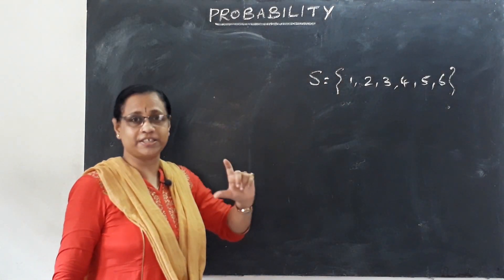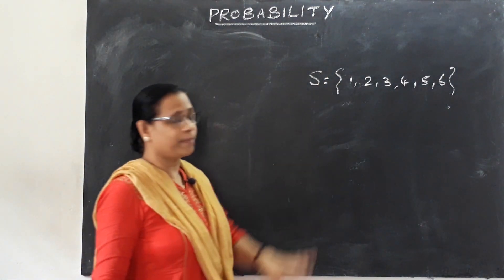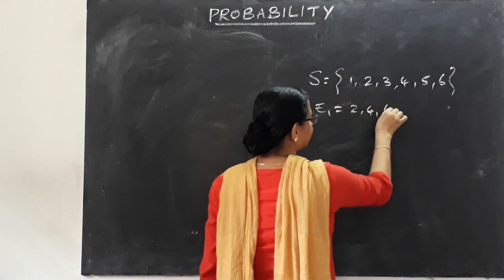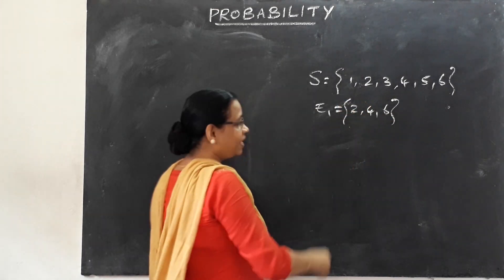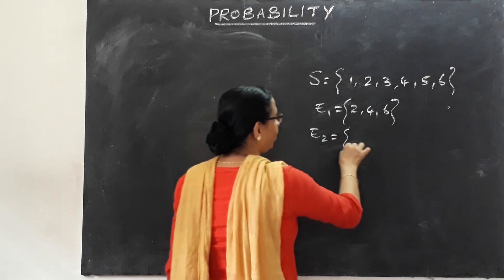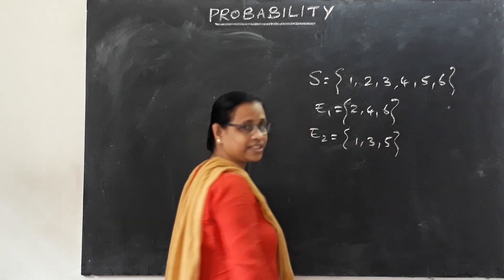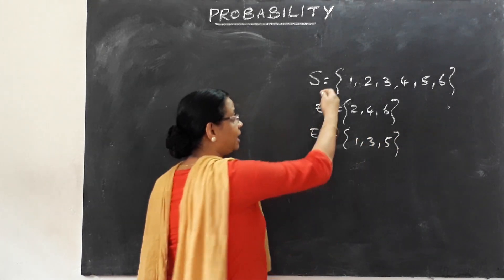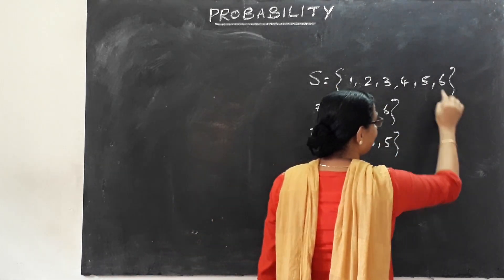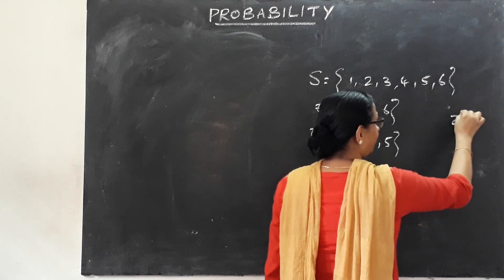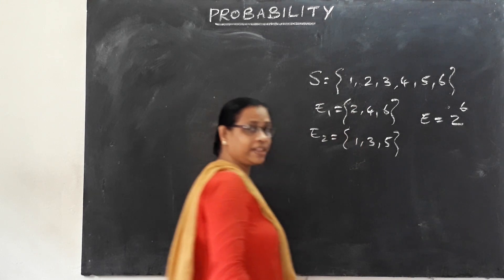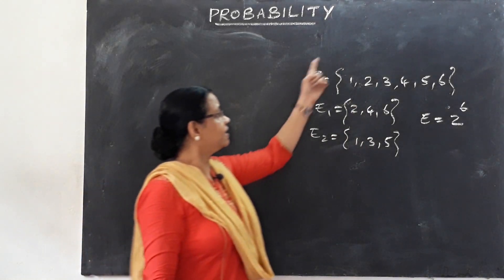An event is a subset of a sample space. For example, even numbers on a die: the event is {2, 4, 6}. Odd numbers: the event is {1, 3, 5}. For a die with 6 sample points, the total number of possible events is 2 raised to 6.